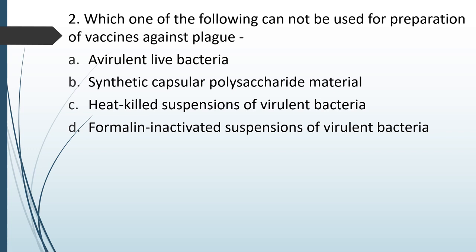Which one of the following cannot be used for preparation of vaccine against plague? (A) Virulent live bacteria; (B) synthetic capsular polysaccharide material; (C) heat killed suspension of virulent bacteria; (D) formalin inactivated substance of virulent bacteria. The correct answer is option C — heat killed suspension of virulent bacteria cannot be used.